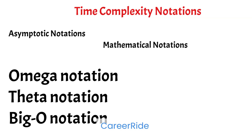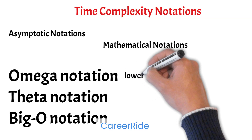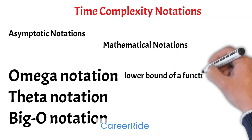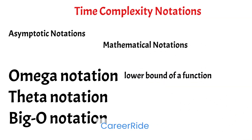Omega notation represents the lower bound of a function — that is, the minimum time taken by an algorithm, or the best case. Omega notation is used to represent this lower bound.